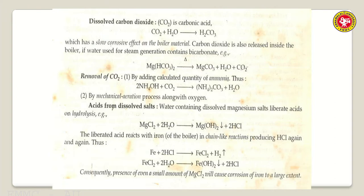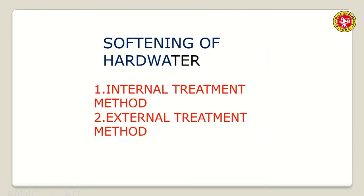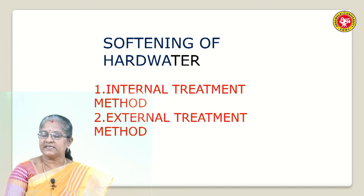The third reason for boiler corrosion is acid from dissolved salts. If magnesium chloride is present in hard water, it produces magnesium hydroxide plus 2HCl. This HCl reacts with the iron boiler body forming FeCl₂. FeCl₂ then reacts with water forming ferrous hydroxide plus more HCl, which attacks again in a chain-like reaction - continuously producing HCl and corroding the iron boiler body. Due to caustic embrittlement, boiler corrosion, scale and sludge formation, and priming and foaming, we must soften the water before feeding it into the boiler.